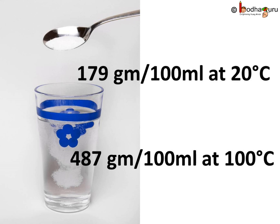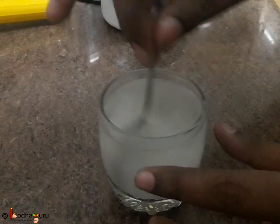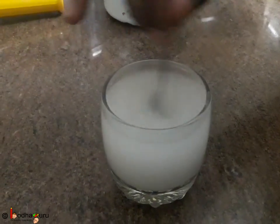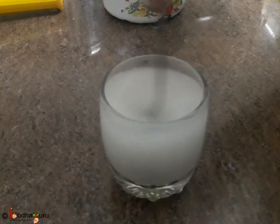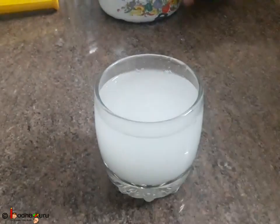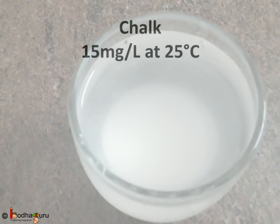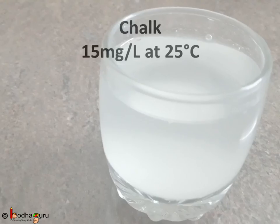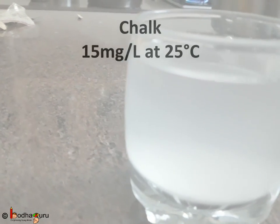As we saw, at 20 degrees centigrade you can dissolve around 179 grams of sugar in 100 ml of water, whereas at 100 degrees centigrade you can add around 487 grams in 100 ml of water. The sugar is soluble and its solubility is really high. But we say chalk is insoluble in water because its solubility is just 15 mg in 1 liter of water at 25 degrees centigrade — and that is too low.